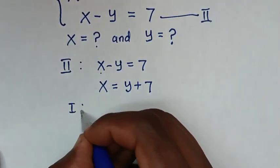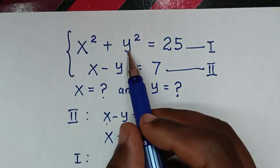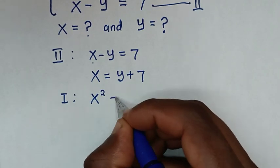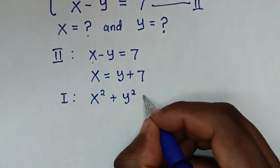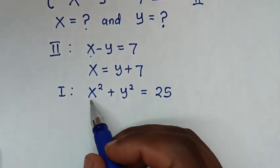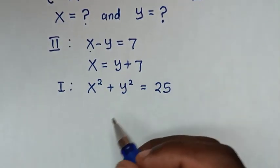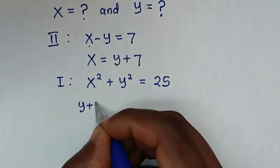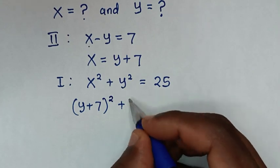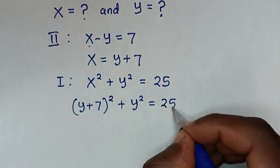From equation 1, which is x squared plus y squared equals 25, we substitute the value of x, which is y plus 7. So it becomes (y plus 7) squared plus y squared equals 25.